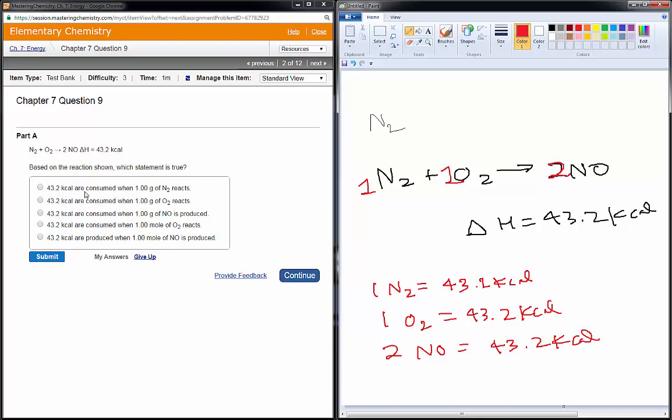So, let's see, 43.2 consumed if one gram of nitrogen reacts? Nope, it would have to be a mole of nitrogen, so that's definitely not true. Same with the second one. One gram? Nope, this is good for one mole. It's a molar ratio.